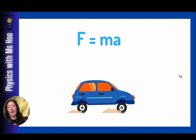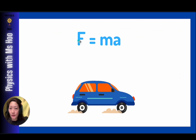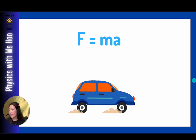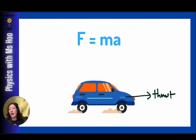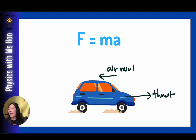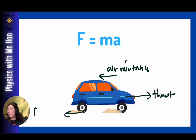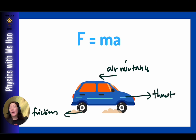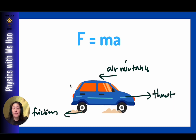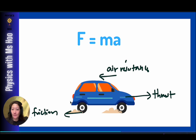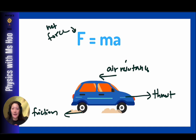The key thing to note is that F is the net force. Sometimes there are several forces acting on an object. For example, on a car you have the engine thrust causing it to move forward, but also air resistance and friction from the road. When calculating net force, we take into consideration all of these forces and their directions. The net force equals thrust minus air resistance minus friction.